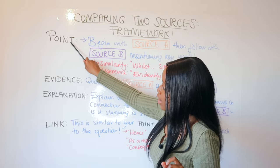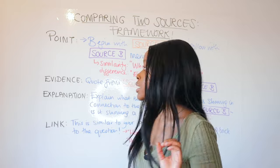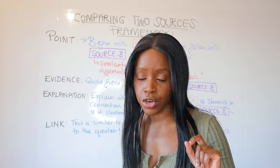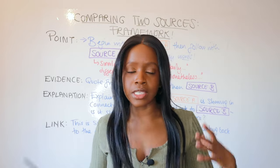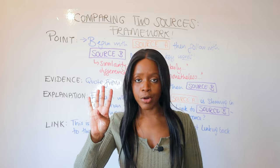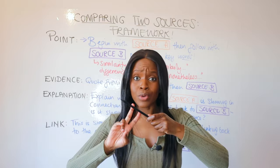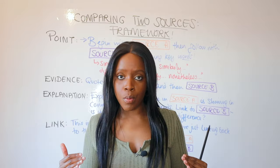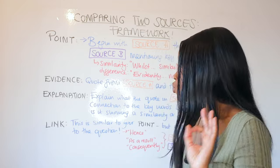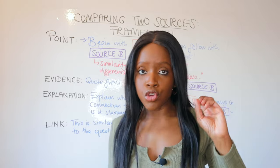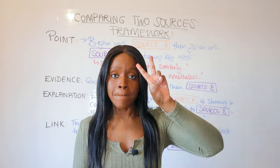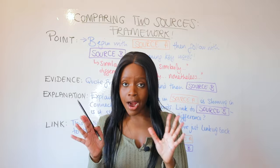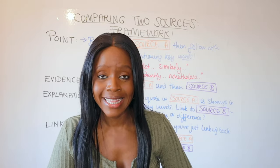You're going to see here that I've structured it into four separate sections: Point, Evidence, Explanation, and Link. This is basically just following a PEEL paragraph structure. PEEL paragraphs are my favourite — they're super easy, there are only four steps to remember, and you can include things like writer's intent and compare viewpoints and perspectives all within the same paragraph. You also need to ensure that you're writing about both sources in one paragraph — that's how you compare, not in two separate paragraphs.